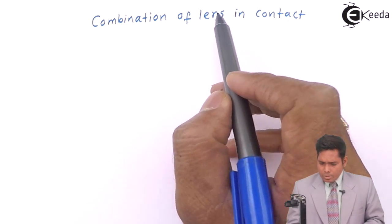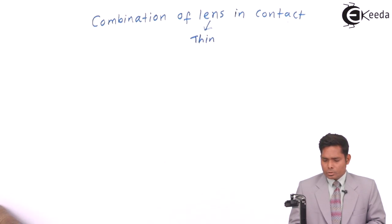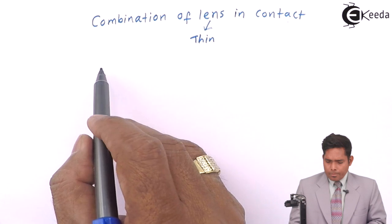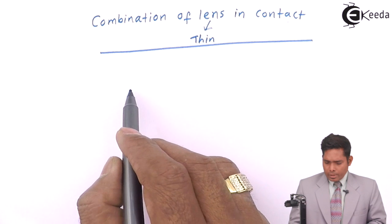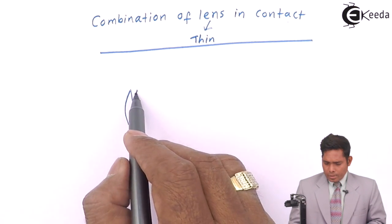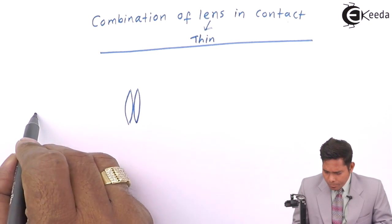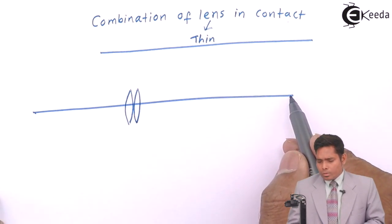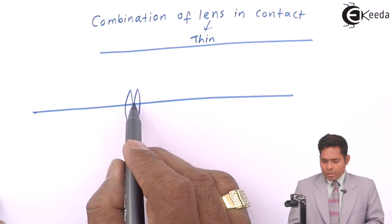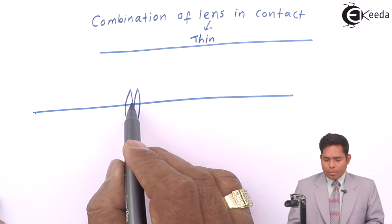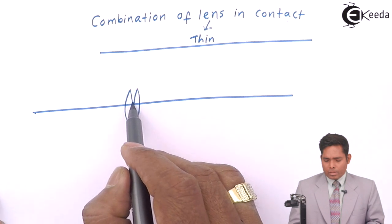In this topic we refer to thin lenses. We have one thin lens and another thin lens which are in contact with each other. This is the principal axis of the lens and these are the optical centers. They are so thin that the distance between them is neglected compared to the distance where the object is placed. So anything can be measured from the center or the point of contact.